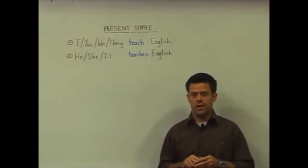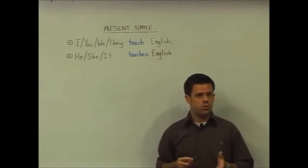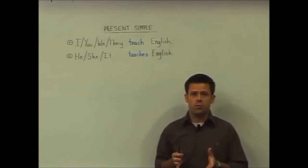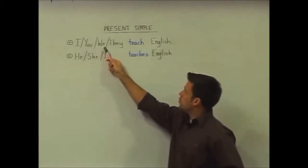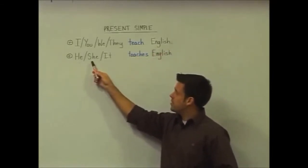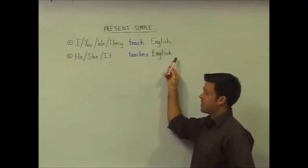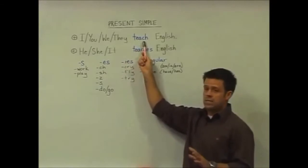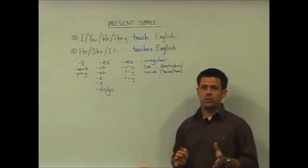We'll begin our examination of all the tenses by first looking at the present tense. There are four present tenses and we'll begin with the present simple tense. It's the most common tense in the English language as it talks about things in general — general facts, routines, habits. Let's focus on the form of the tense. For subjects I, you, we, and they, we use the base form of the verb. For he, she, and it subjects, we have to conjugate our verb — in this case we've added an 'es' for 'teaches'. With he, she, and it, we have some patterns for verb conjugations to look at.